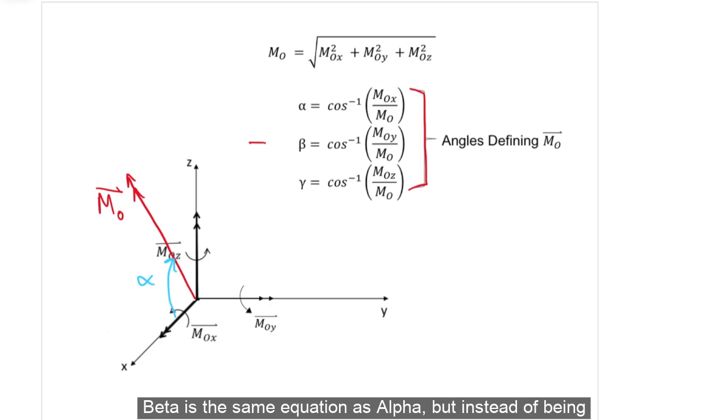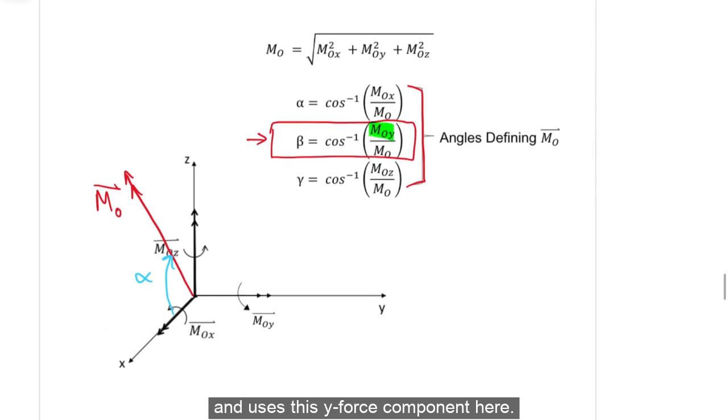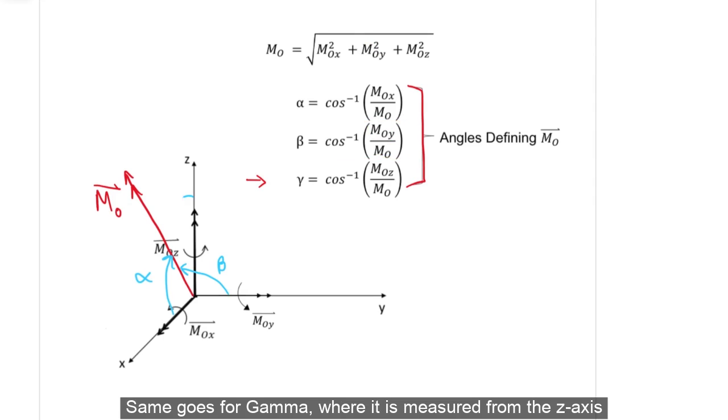Beta is the same equation as alpha, but instead of being measured from the x-axis, it is measured from the y-axis and uses this y-force component here. Same goes for gamma, where it is measured from the z-axis and uses the z-force component here.